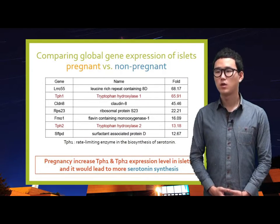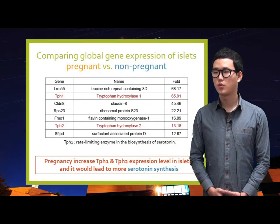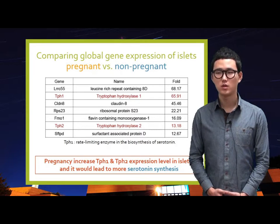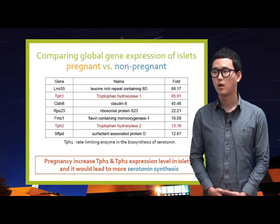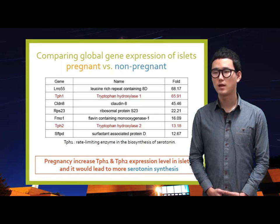To figure out the molecular mechanisms of this unusual phenomenon during pregnancy, researchers performed mRNA deep sequencing. They compared global gene expression of islets of Langerhans between pregnant and non-pregnant mice. As a result, they found several differentially expressed genes and focused on the TPH1 gene, which encodes the rate-limiting enzyme in the biosynthesis of serotonin. In conclusion, serotonin levels increase in beta cells during pregnancy due to high expression of TPH genes, suggesting serotonin is related to beta cell adaptation during pregnancy.